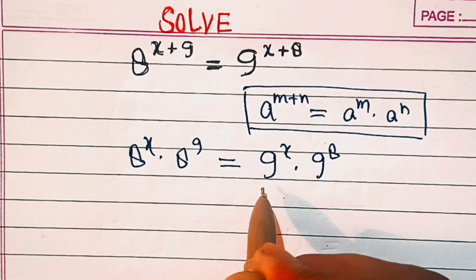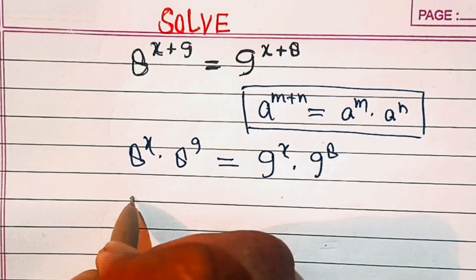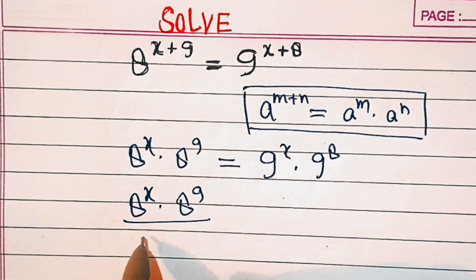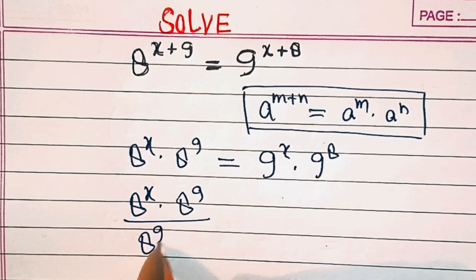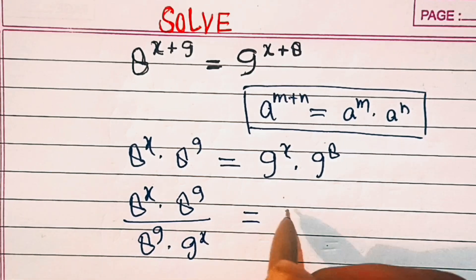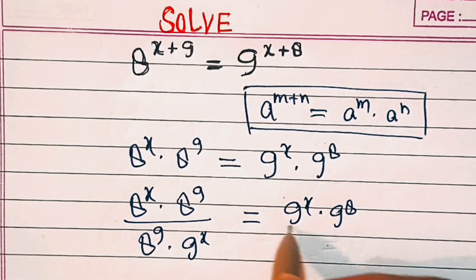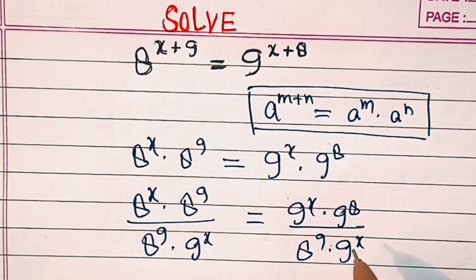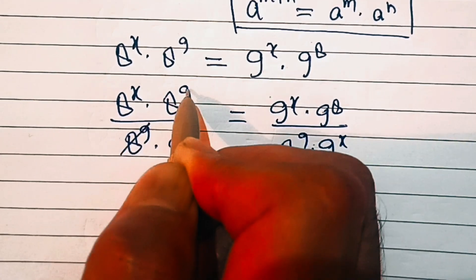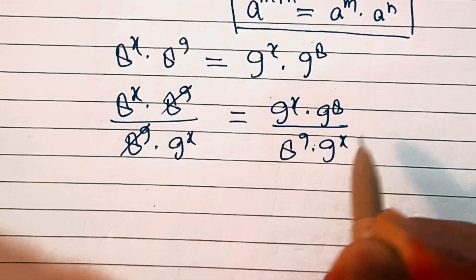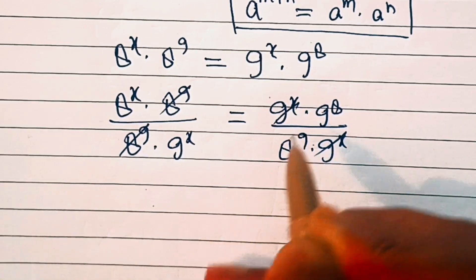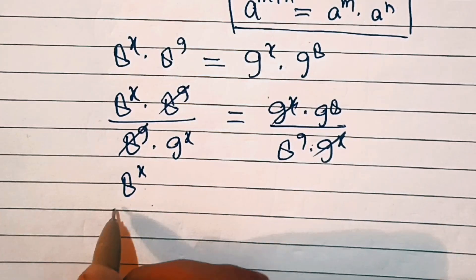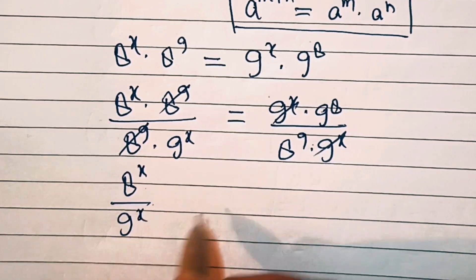Now we'll divide both sides by 8 power 9 into 9 power x. On the left side, 8 power 9 and 8 power 9 will cancel out. On the right side, 9 power x and 9 power x will get cancelled. So here remains 8 power x over 9 power x equals 9 power 8 over 8 power 9.